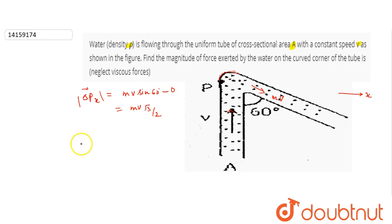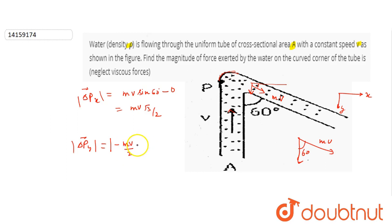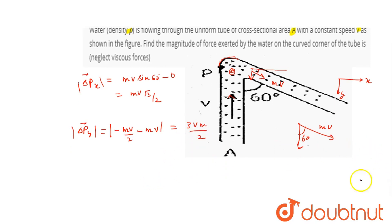Similarly, momentum change delta P in Y direction — what will be the final momentum in Y direction? We will take downward as negative Y and upward as positive. The final momentum is at 60 degrees, and its component downward is in negative Y direction. So that is minus MV·cos60. Cos60 is 1/2, so that is minus MV/2. Minus initial momentum upward, which is positive MV. For a single particle of mass M, its momentum change in Y will be: minus MV/2 minus MV = minus 3MV/2. The magnitude is 3MV/2.